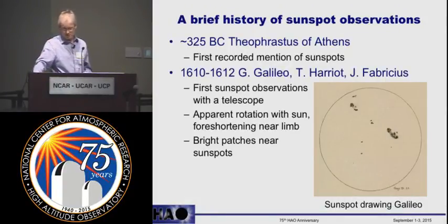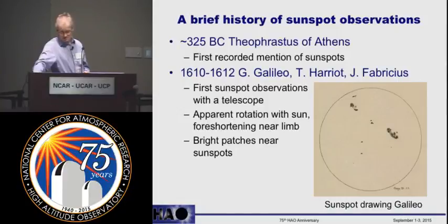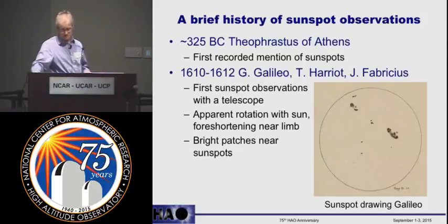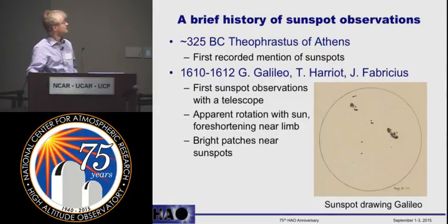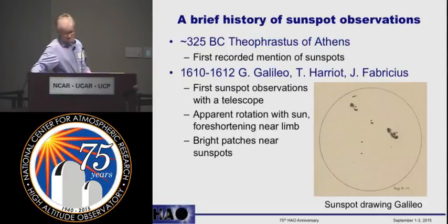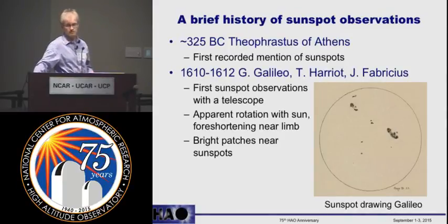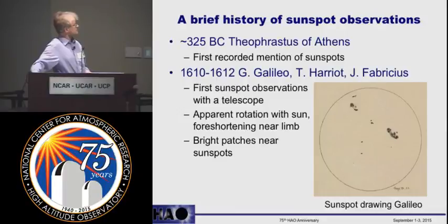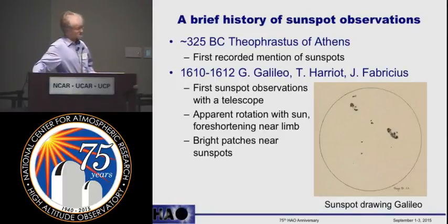The first systematic observations of sunspots and their properties started after the invention of the telescope. The three persons who observed sunspots early on were Galileo, Harriet, and Fabritius. Galileo was first, one month earlier than Harriet, and Fabritius was the first who really wrote up what they saw. This is a drawing by Galileo, and you can already see that telescopes were good enough to clearly distinguish the dark umbra from the penumbra. They also noticed solar rotation, foreshortening near the limb, and even bright patches near sunspots — which we know today as faculae.